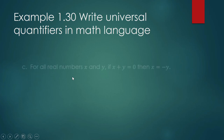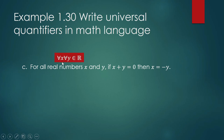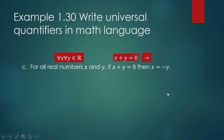Example (c): For all real numbers x and y, if x plus y is zero, then x is equal to negative y. Again, 'for all real numbers' uses the universal quantifier: for all x and y that are real numbers. There is a connective 'if...then,' so we use the implication symbol. The math sentence reads: for all x and y that are real numbers, if x plus y equals zero, then x equals negative y.